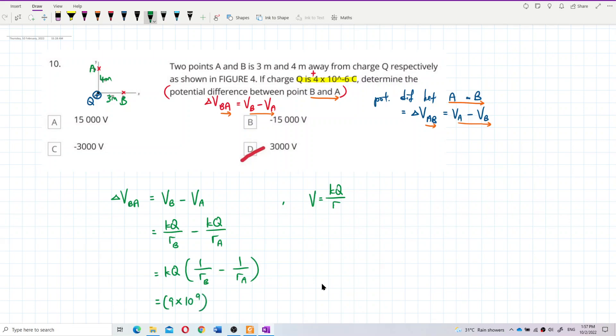Q is 4×10^-6 coulombs, and then 1 over r_B, r_B is 3 meters, and then r_A is 4 meters.